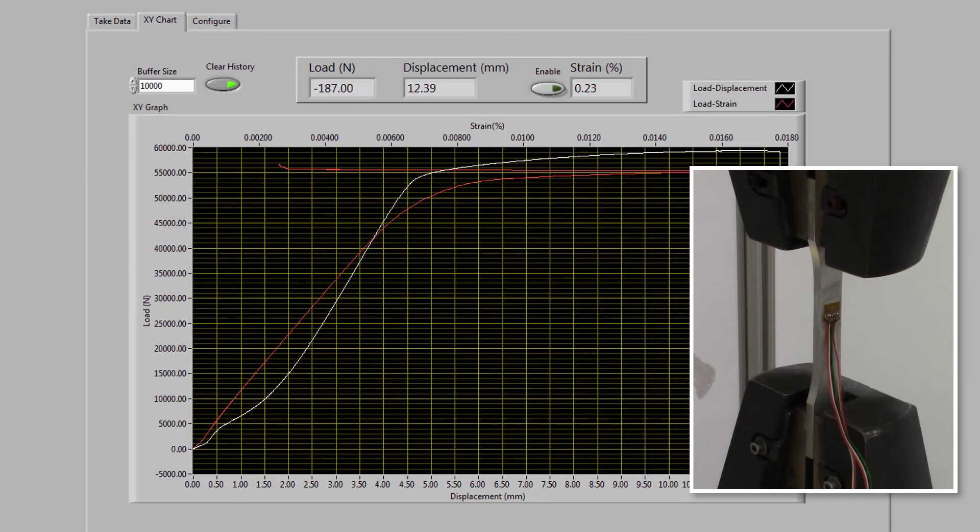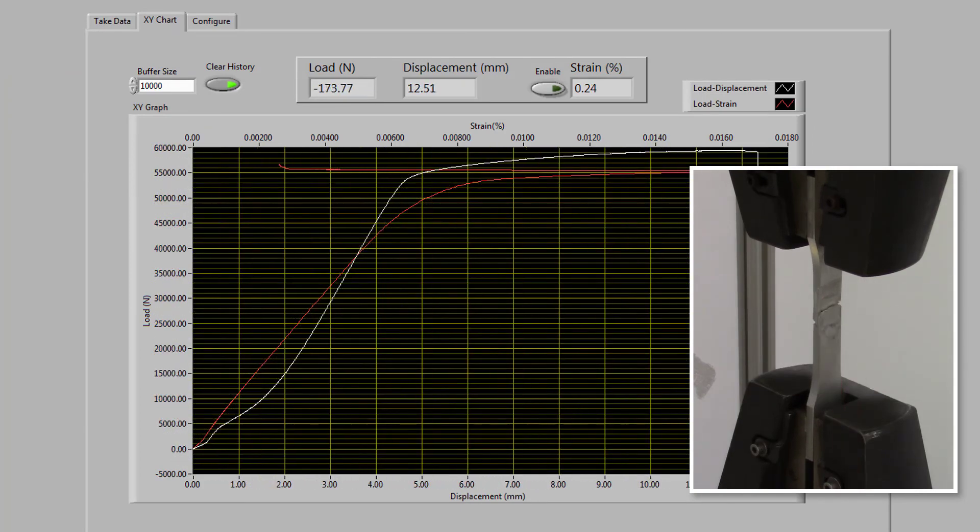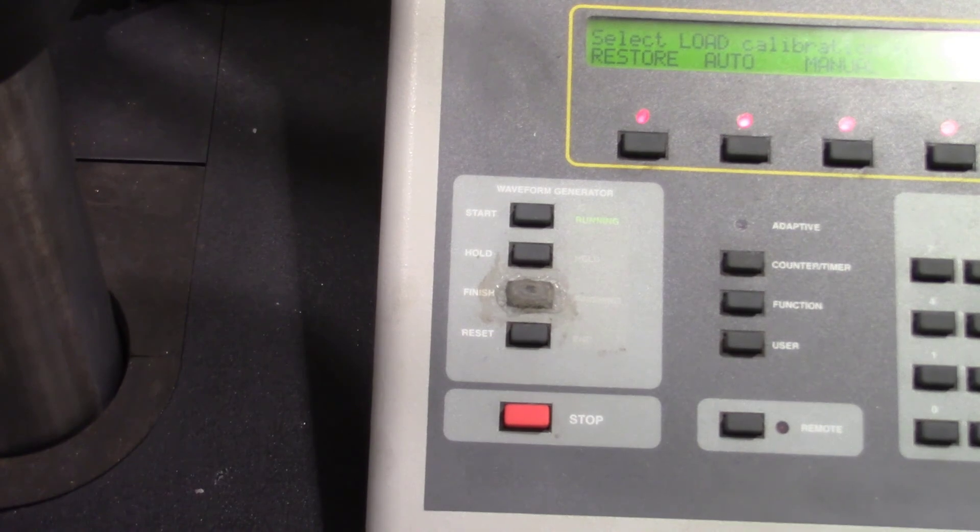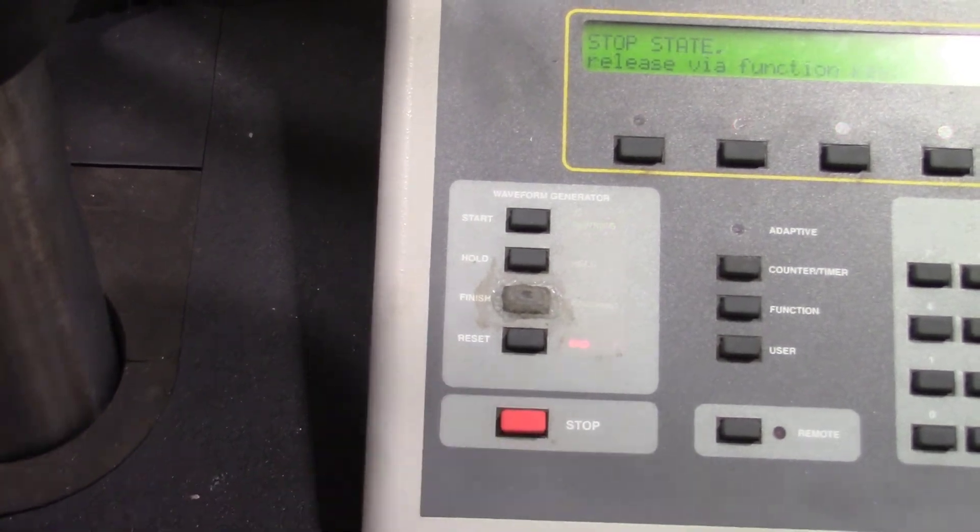After reaching a peak, the load will slowly begin to drop until the specimen fails. Once failure occurs, press the red Stop button on the INSTRON.